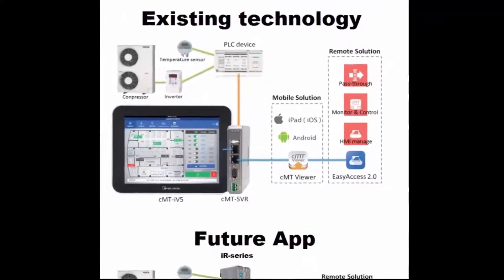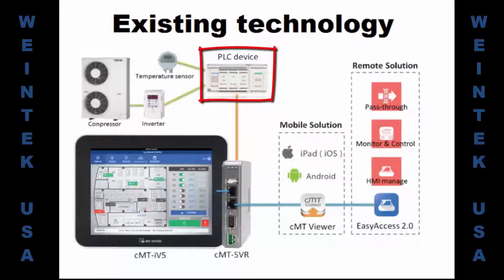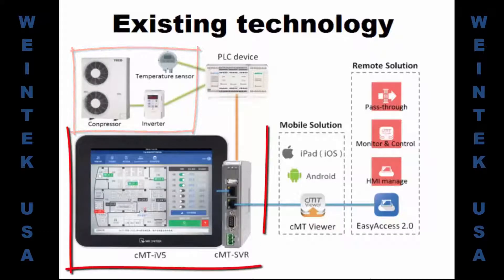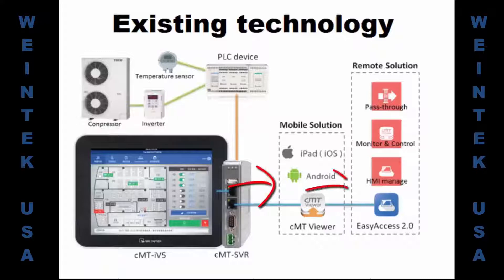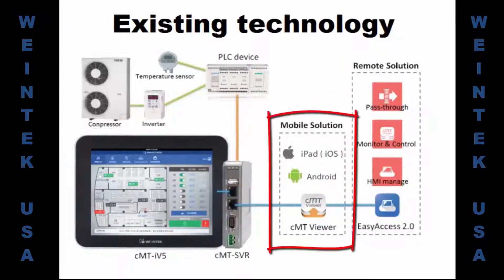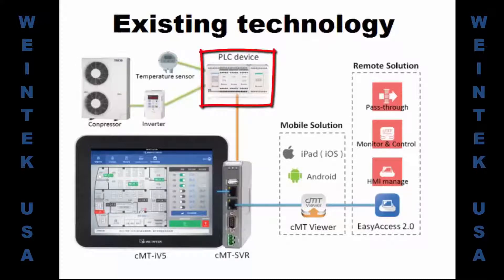Hello again. In this video we are going to discuss a very common building automation example using WinTech technology. This is an example of a very common building automation system with a PLC connected to the climate control equipment. The PLC is connected to a CMT-SVR and an IV-5, which gives you a mobile and remote solution. You can also access through CMT Viewer on your local network or over Easy Access 2.0 using your PC, Android, or Apple device. You also have the ability to connect to your PLC using your native PLC software using the pass-through feature in Easy Access 2.0.